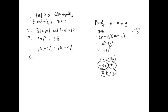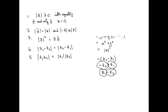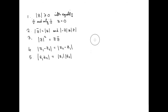Now the fifth property of modulus: the modulus of a product z1 times z2 equals the product of the two moduli, |z1| times |z2|. This requires a little thought. The way we'll prove it is by using property 3 — we'll look at the modulus of the product squared first, apply property 3, and see what happens.